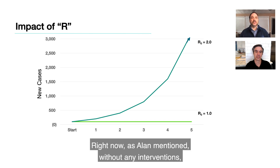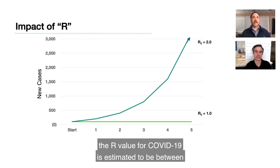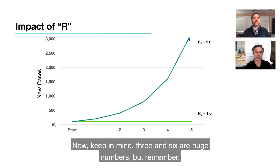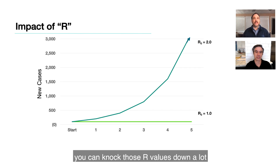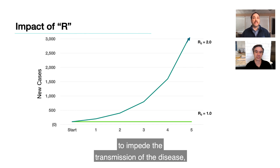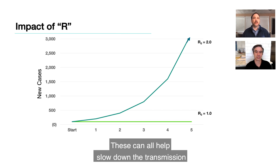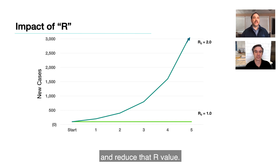Right now, as Alan mentioned, without any interventions, the R value for COVID-19 is estimated to be between 3 and 6. Keep in mind 3 and 6 are huge numbers, but remember you can knock those R values down a lot with various interventions to impede the transmission of the disease — like isolating people who are infected, social distancing, wearing protective masks. These can all help slow down transmission and reduce that R value.